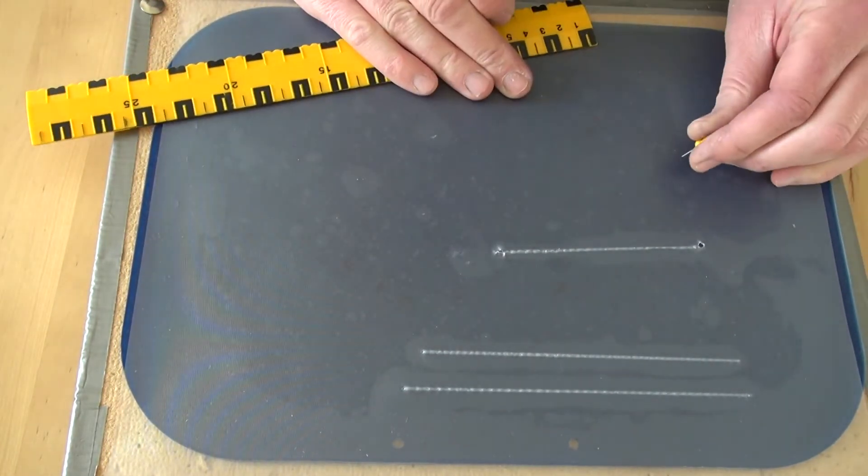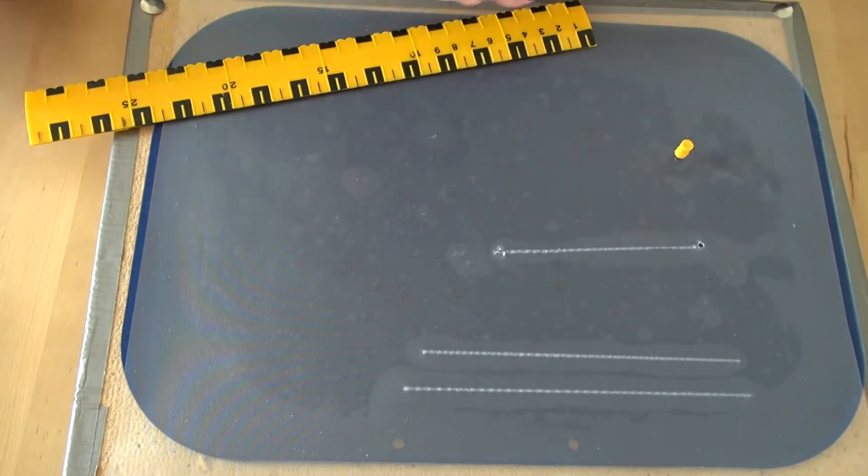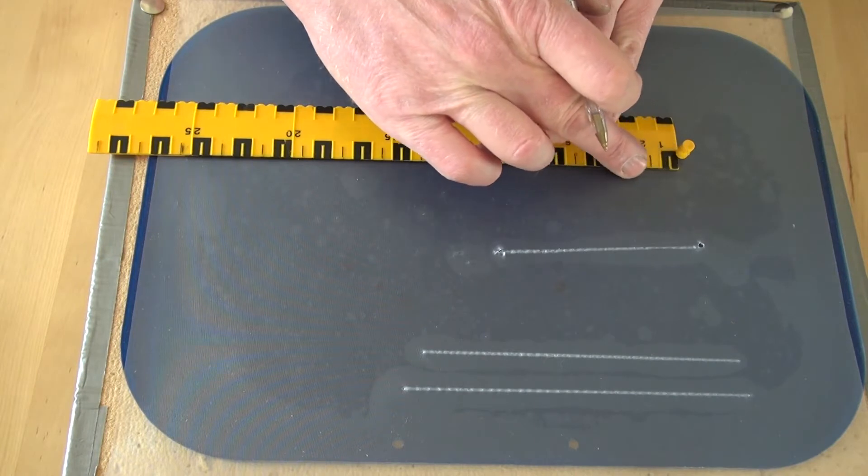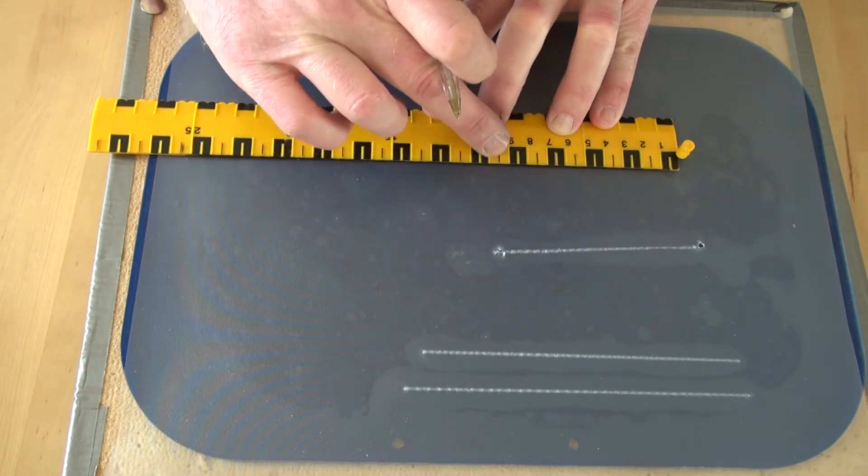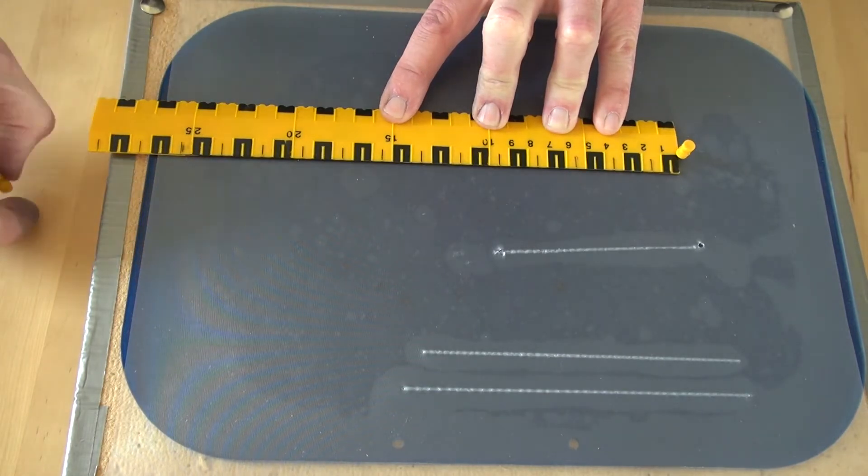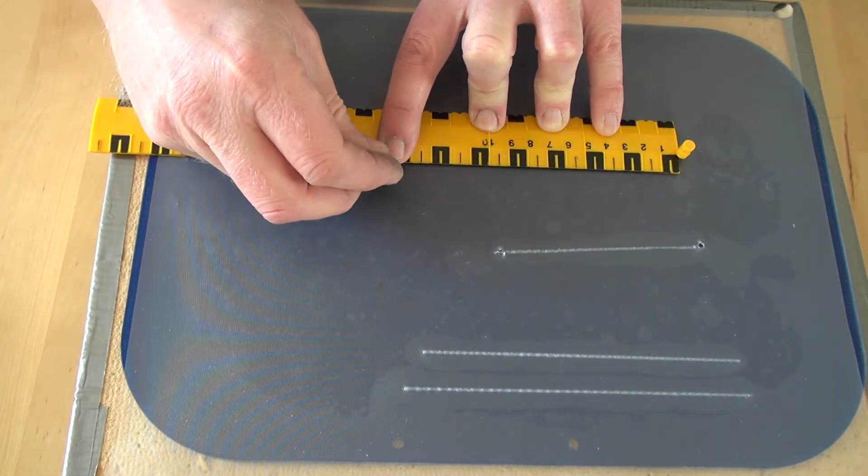So place the pin in where you want it to start. We'll do fifteen centimeters this time. Jam the ruler up against the end. Find fifteen - that's five, ten, fifteen. Pin it at fifteen.